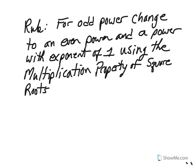So the rule is: for odd powers, we're going to change to an even power and a power with an exponent of 1, using the multiplication property of square roots.